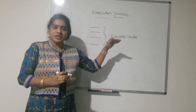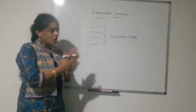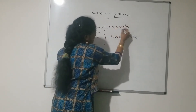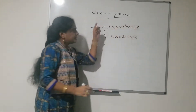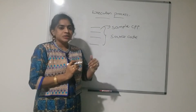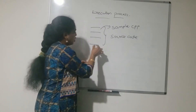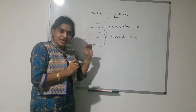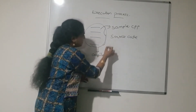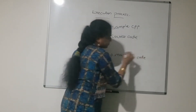Source code means the code which was written by the user. Suppose I have written some sample program. After writing the program, I have to save it with a file name like sample.cpp — since it is a C++ program, we save it with the .cpp extension. After writing this, when we compile, what does the compiler do? The compiler converts our source code to machine code, that is, machine-understandable code.